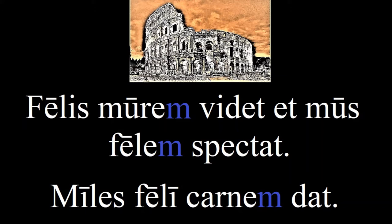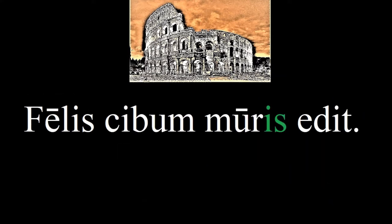Thankfully, the genitive case is different, as we can see in the next sentence: 'The cat eats the mouse's food.' The word 'kibum' means food. It might help to think of the word 'kibble' — the hard dog and cat food — in order to remember this word. And looking at the ending, what declension is it? Second, which means the nominative form is 'kibbus.'